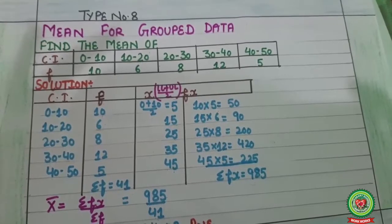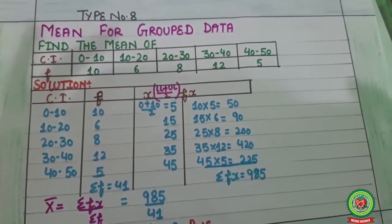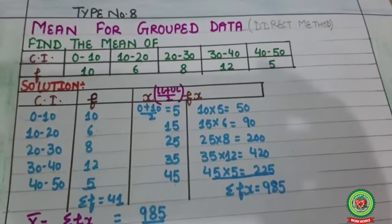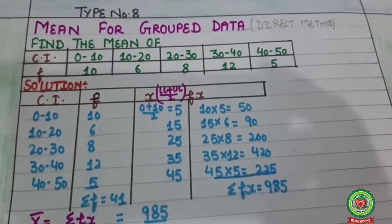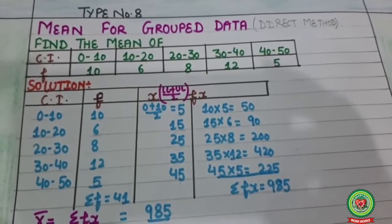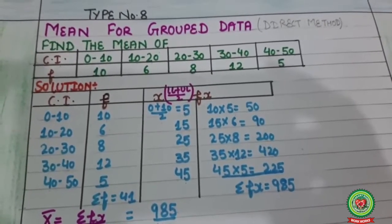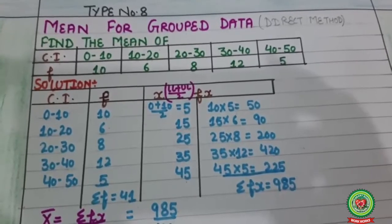Now let us understand what is direct method. Let's start with the question. The statement is: find the mean of class interval 0 till 10, 10 till 20, 20 till 30, 30 till 40, and 40 till 50, and the corresponding frequency is 10, 6, 8, 12, and 5.